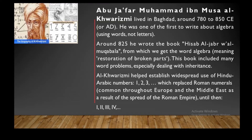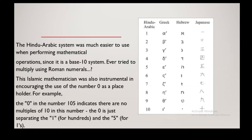Al-Kharizmi helped establish widespread use of Hindu-Arabic numbers — 1, 2, 3, and so on — which replaced Roman numerals, common throughout Europe and the Middle East as a result of the spread of the Roman Empire. The Hindu-Arabic system was much easier to use when performing mathematical operations since it is a base 10 system. Ever tried multiplying using Roman numerals?